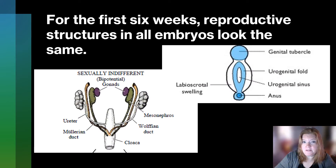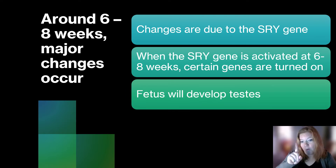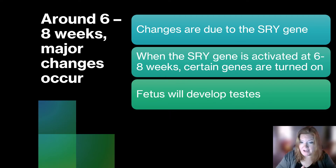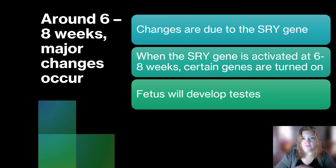For the first six weeks, the reproductive structures in all embryos look the same. On average, around six to eight weeks, major changes occur in the embryo. Those changes are primarily due to one gene: the SRY gene. When the SRY gene is activated at that time frame, certain genes are turned on, and then the fetus will develop testicles. In absence of the SRY gene, ovaries develop.